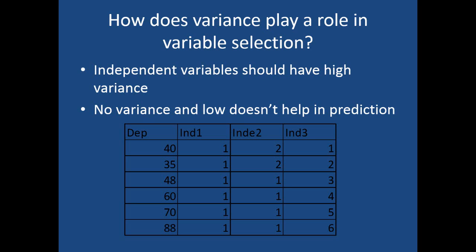Let's take an example. We have one dependent variable and three independent variables. Independent variable one has all constant values — if you compare it with the dependent variable, even when the dependent variable changes, there is no change in independent variable one. That means they are not related at all. Independent variable two has some variation — two values, two and one — but the variability is much less.